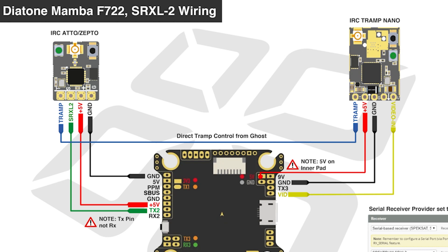ImmersionRC has some great wiring diagrams on their website. This is an example of a separate Ghost receiver and Tramp Nano being wired to an F7 flight controller — it doesn't actually matter whether it's F7 or F4, the wiring is exactly the same. You're going to wire the signal wire to a UART TX pad, assuming you're using SRXL2, but when Betaflight 4.3 comes out you'll be able to use the Ghost protocol instead. The tramp wire goes directly to the T telemetry tramp wire on the video transmitter. If you're working with the Ghost Hybrid, the wire connecting the receiver to the video transmitter is inside the Ghost Hybrid — you don't have to wire it, they're already automatically connected.